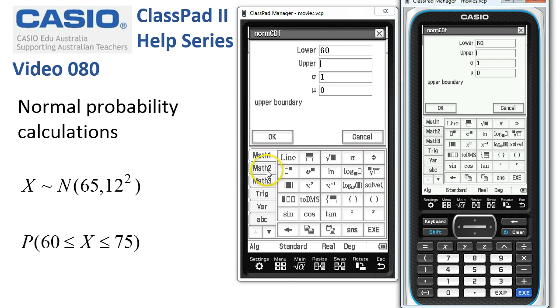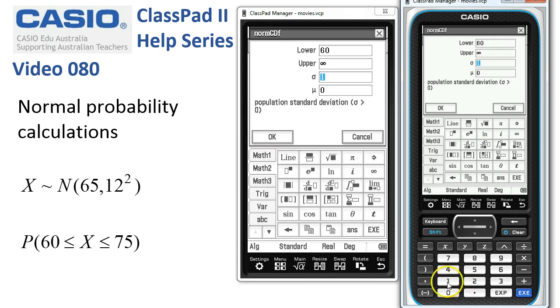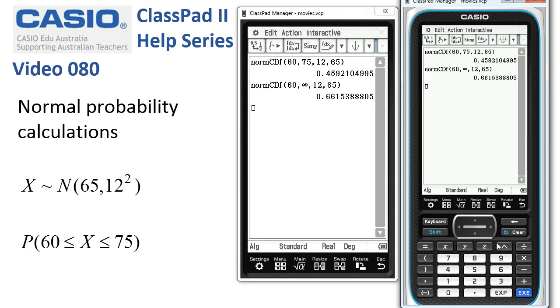Now the upper is infinity. You will find that on the math 2 menu over here. Here's infinity. Tap execute. Standard deviation is still 12. Tap execute. The mean is still 65 and once, twice, and our probability is calculated.